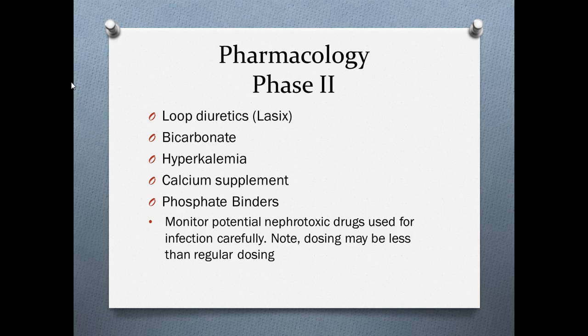Calcium supplements are given to reverse the calcium-phosphate inverse relationship — give calcium and phosphorus will decrease. Phosphate binders are taken with meals; they bind the phosphate from food in the gut and prevent it from being absorbed, passing it through stool instead. Also look carefully at potentially nephrotoxic drugs used for infection — patients may need a renal dose or nephro-dose due to their renal function.